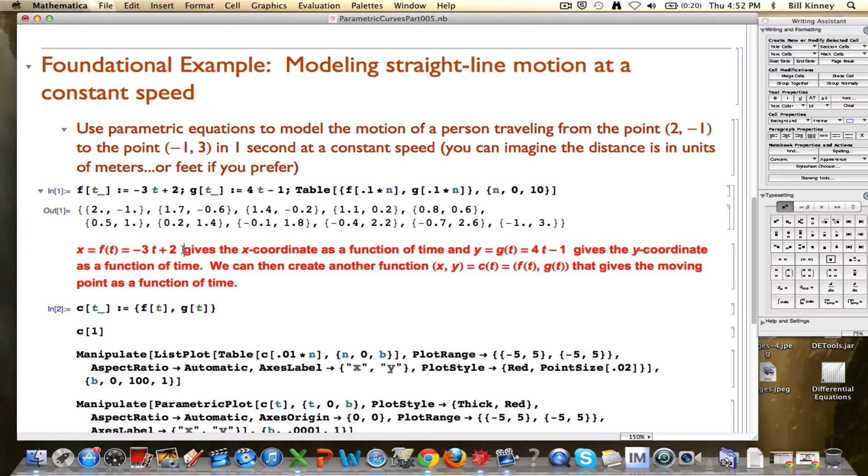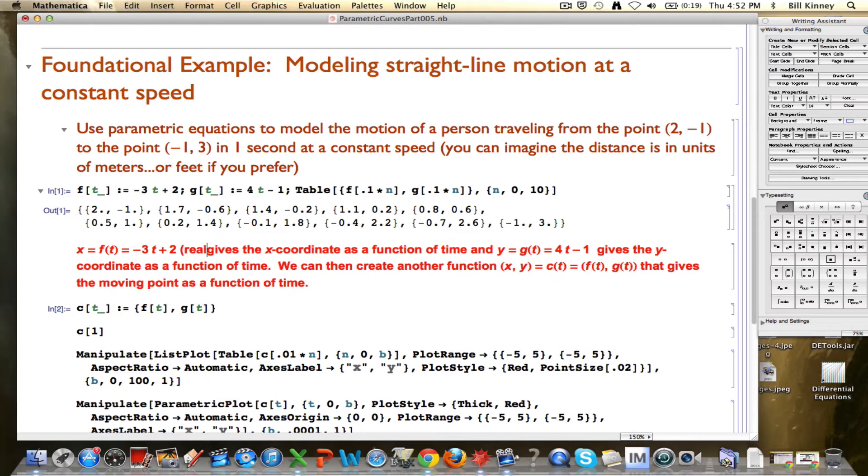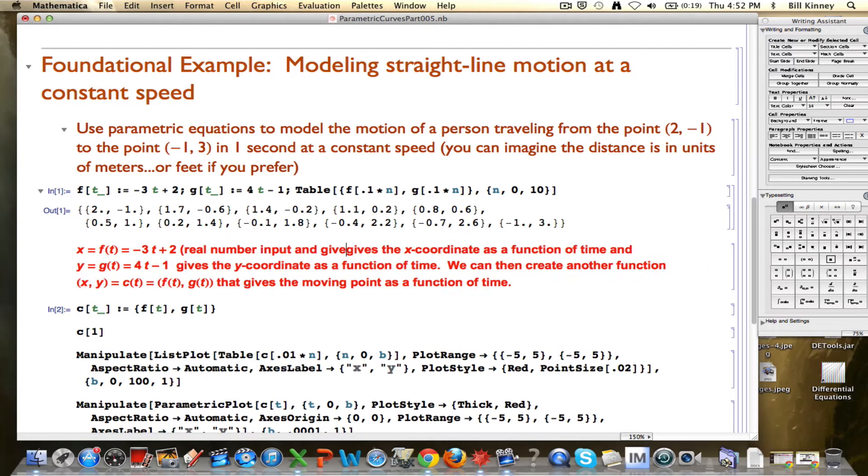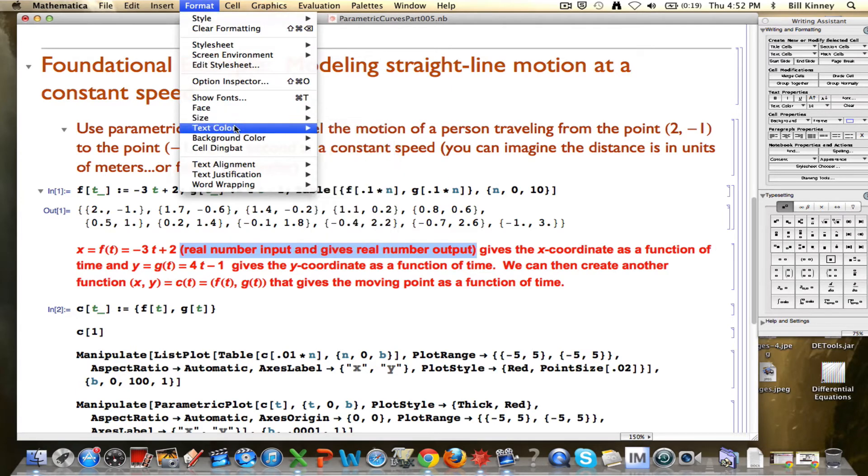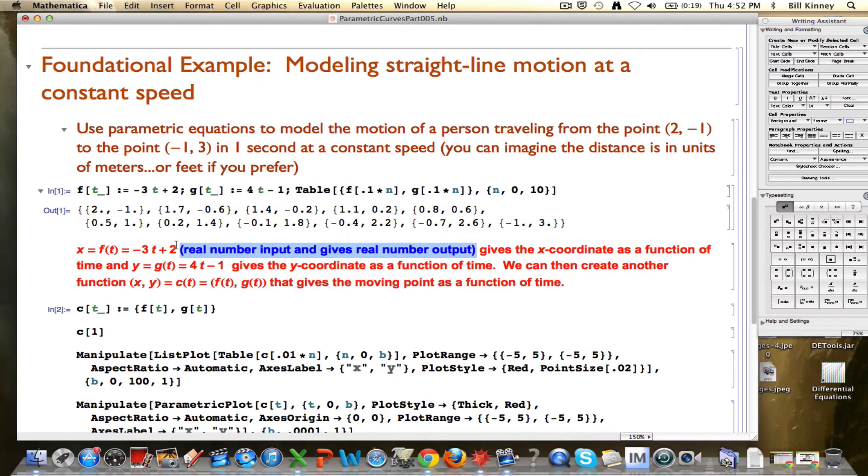First thing I want to emphasize here now mathematically is that these two functions and the third function, the c of t are different kinds of functions. f takes real number input and gives real number output. Remember functions take input, in this case t, the parameter for these parametric equations, is the input, and it gives you real number output. So t is the input here, x is the output, both are real numbers, typical kind of function that you deal with in pre-calculus and calculus.